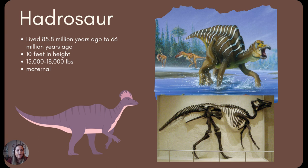Hadrosaurs — we did have a few of those in California. They lived 85 million years ago until the extinction of the dinosaurs. They were about 10 feet in height and weighed around 15,000 to 18,000 pounds. These ones were interesting because they were pretty maternal — a lot of them were found preserved next to eggs. Based on some of the trace evidence, a lot of scientists believe they were very maternal in nature, trying to protect their young until they were ready to protect themselves.